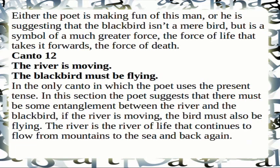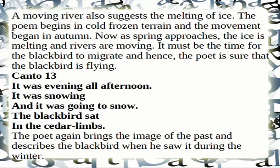Canto 12: 'The river is moving. The blackbird must be flying.' This is the only canto in which the poet uses the present tense. The poet suggests an entanglement between the river and the blackbird — if the river is moving, the bird must also be flying. The river is the river of life flowing from mountains to the sea and back. A moving river suggests the melting of ice; as spring approaches, the ice melts and rivers move, so the blackbird must be migrating.